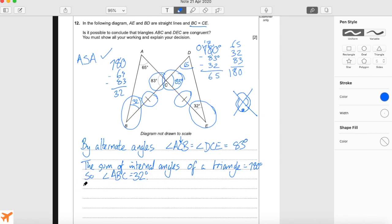We know that—I've just realized I missed a step here. We need to say that angle ABC is the same as angle DEC. We know angle ABC equals 32 degrees, which equals angle DEC, which was given from the question.